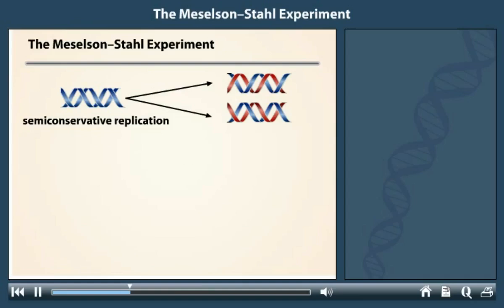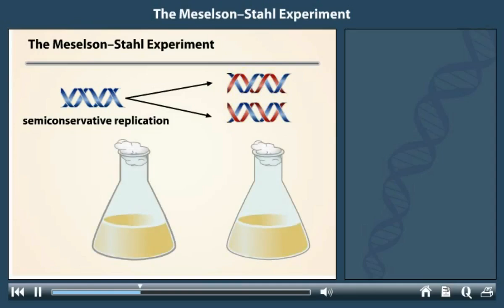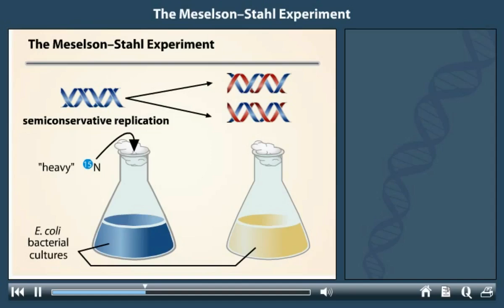The key to the Meselson-Stahl experiment was devising a strategy to distinguish between old versus newly synthesized DNA. They distinguished the two by labeling them with isotopes. They grew Escherichia coli bacteria in the presence of either a heavy isotope of nitrogen, N15, or the ordinary light isotope, N14.